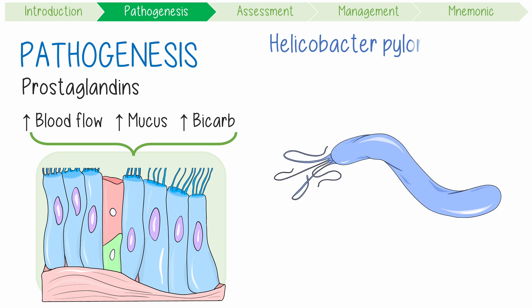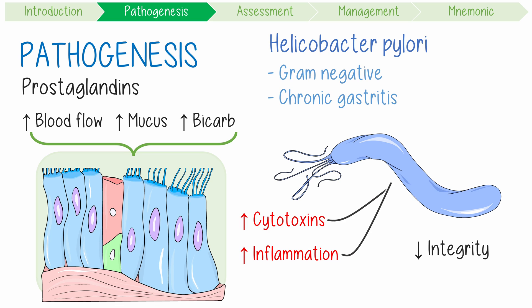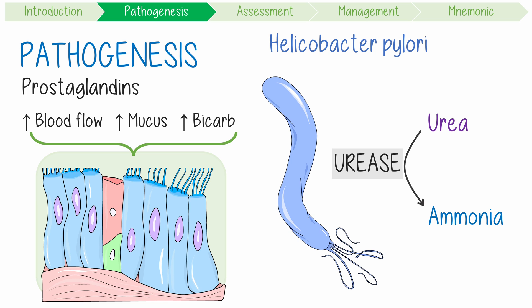H. pylori are gram-negative, S-shaped bacteria which trigger chronic gastritis by releasing cytotoxins and provoking inflammation. This weakens mucosal defenses by impairing epithelial integrity and altering acid secretion. They produce urease, which converts urea into ammonia, helping to alkalinize the surrounding pH.